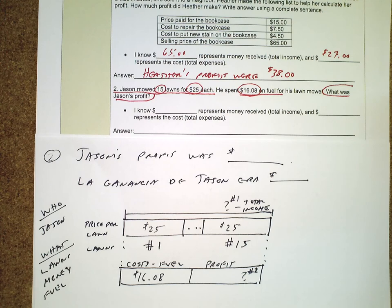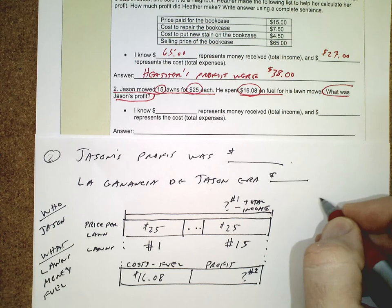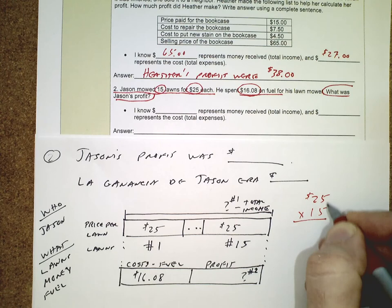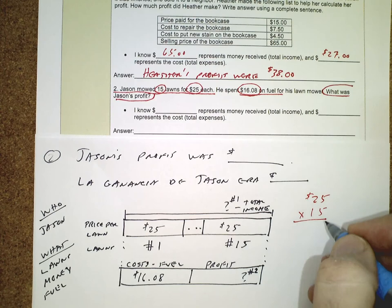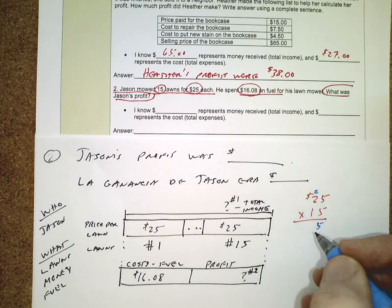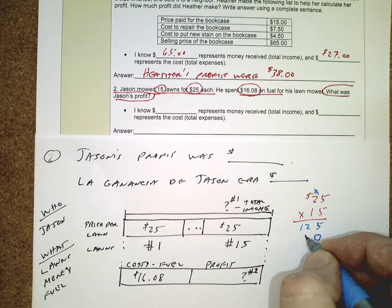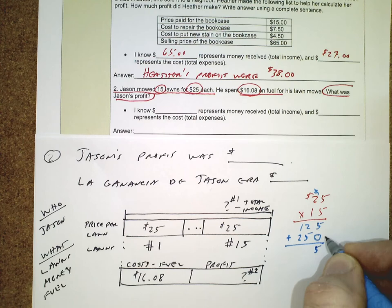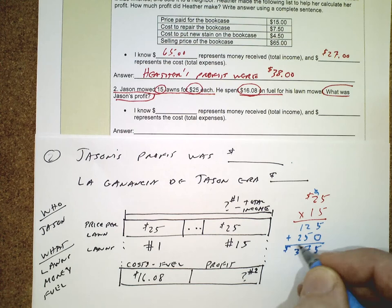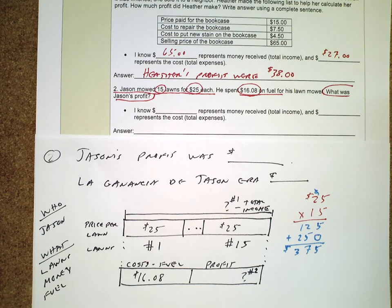We have to multiply 15 times 25. I'll show two methods. First, the standard algorithm: 5 times 5 is 25, regroup the 2. Five times 2 is 10, plus 2 is 12 tens. Then multiplying by 10, put our zero, and 1 times 25 is 25. Adding together: 5 plus 0 is 5, 2 plus 5 is 7, 1 plus 2 — we get $375.